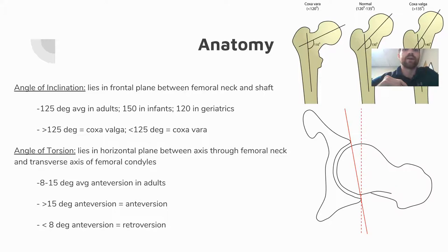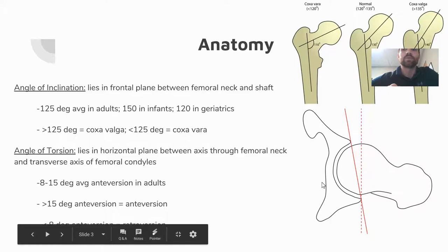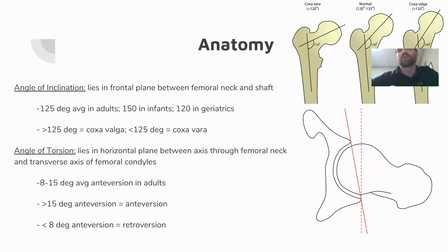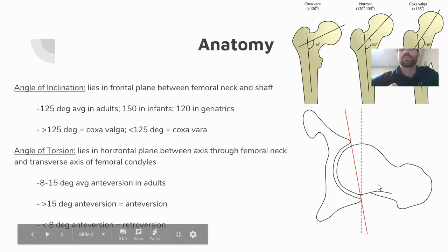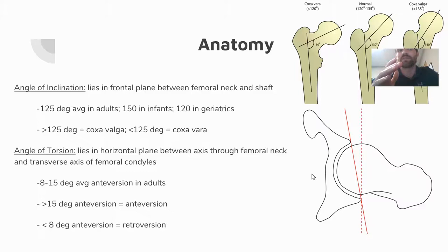With retroversion, the hip must laterally rotate to reach the ideal position, so these patients walk more duck-footed, which feels natural to them. Trying to correct it causes pinching anteriorly due to excessive internal rotation. Anteverted patients have excessive internal rotation and significant loss of external rotation; retroverted patients have significant loss of internal rotation but excessive external rotation. These concepts are important when discussing movement impairment syndromes and lumbar spine effects.